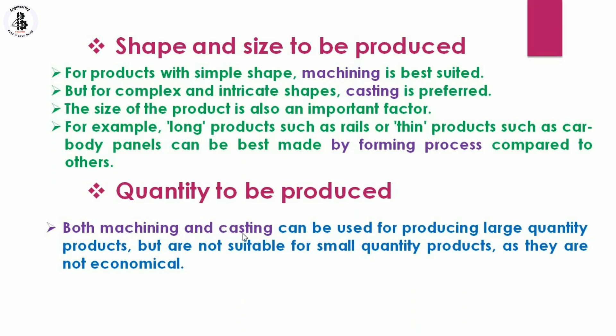In the case of machining, casting, or powder metallurgy, good production is only feasible with respect to economical considerations for mass production. If the number of quantities is large, then it will have good feasibility. So the second factor is quantity to be produced.